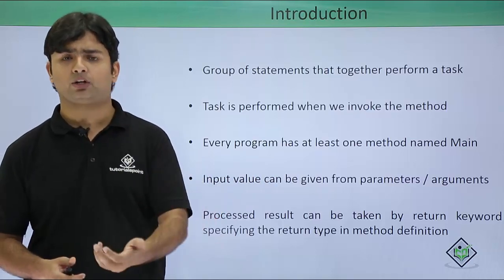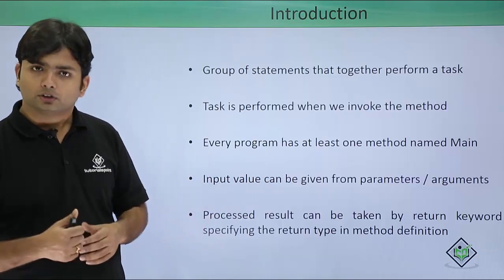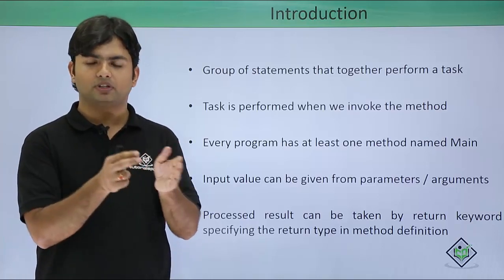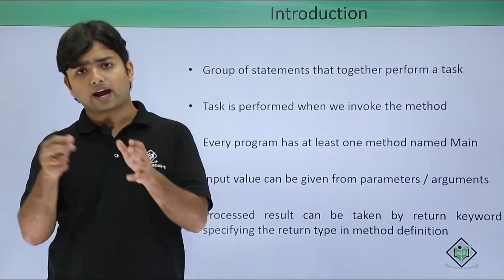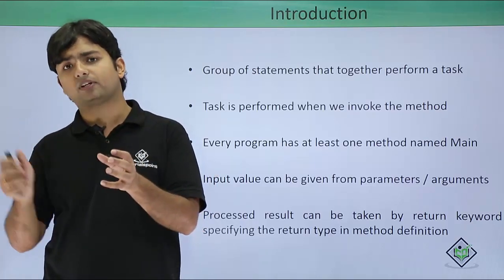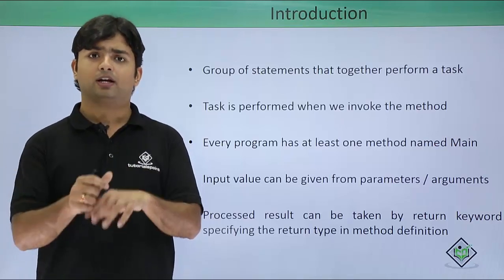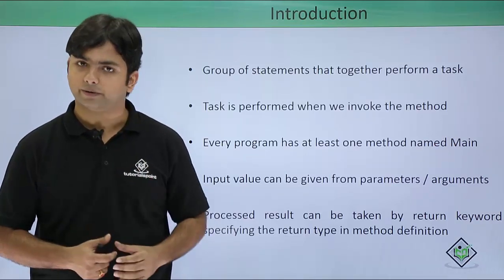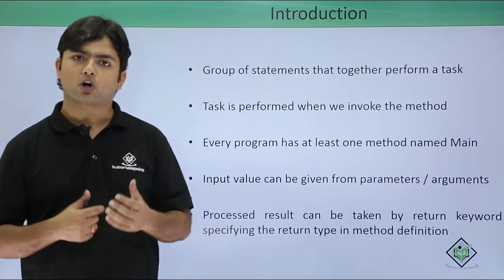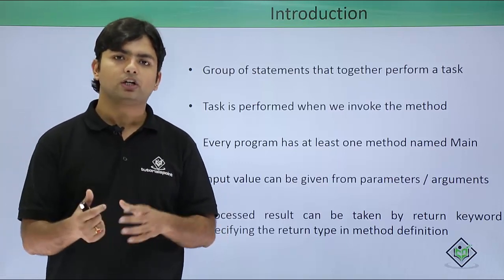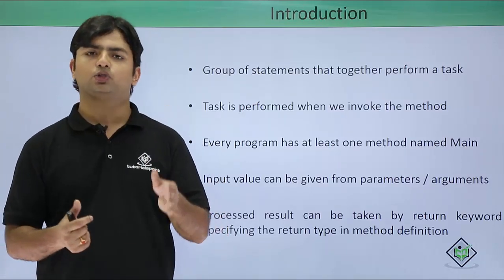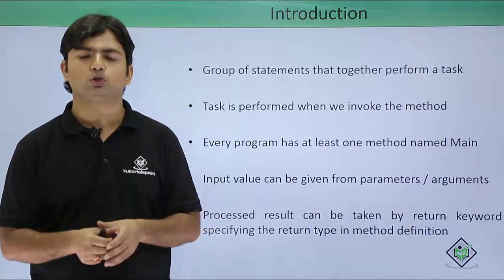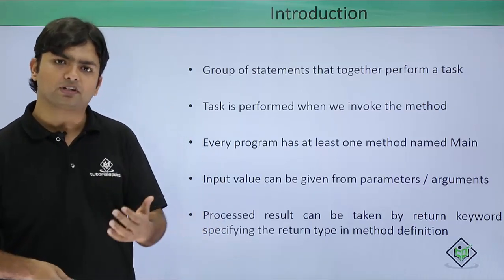The method name along with the signature - meaning the return type, number of parameters, and parameter types - creates one method signature. When you are calling the method, you don't need to pass the return type; you just need to use the method name along with the values you want to pass as parameters.